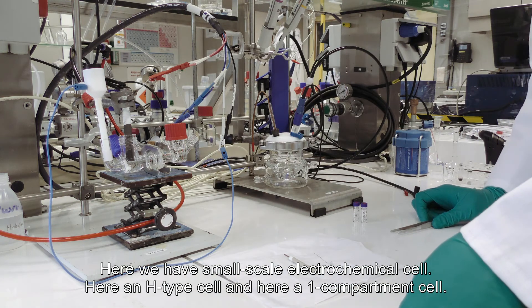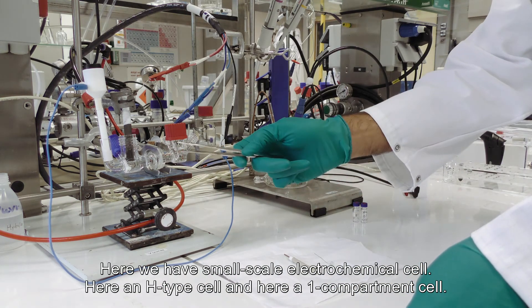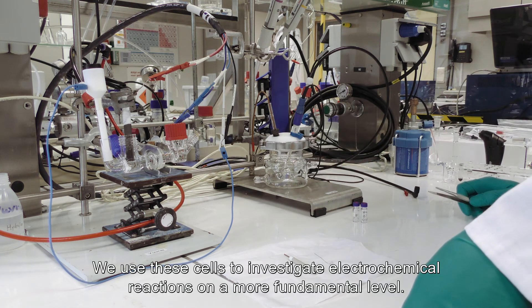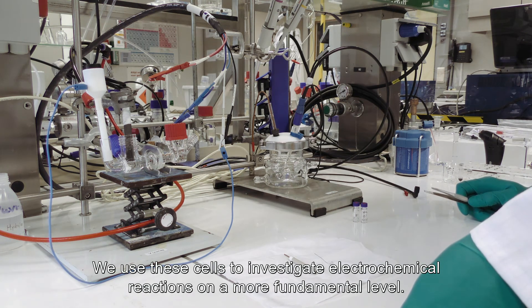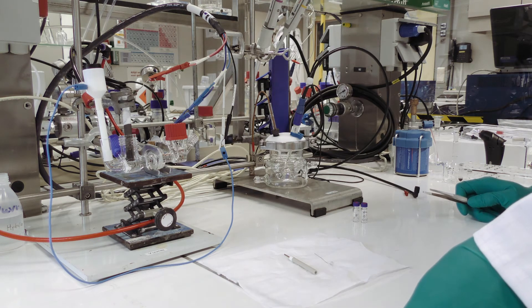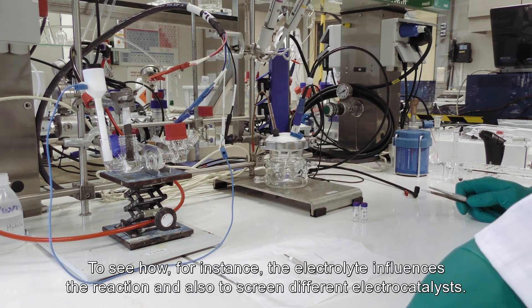Here we have small scale electrochemical cells. Here an H-type cell and here a one compartment cell. We use these cells to investigate electrochemical reactions on a more fundamental level to see how, for instance, the electrolyte influences the reaction and also to screen different electro catalysts.